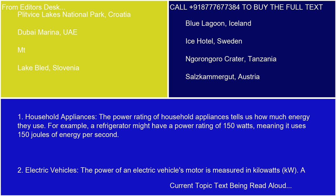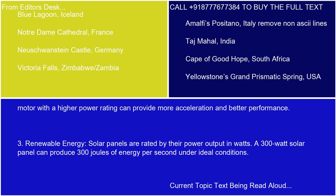Electric vehicles: the power of an electric vehicle's motor is measured in kilowatts (KW). A motor with a higher power rating can provide more acceleration and better performance. Renewable energy: solar panels are rated by their power output in watts. A 300-watt solar panel can produce 300 joules of energy per second under ideal conditions.